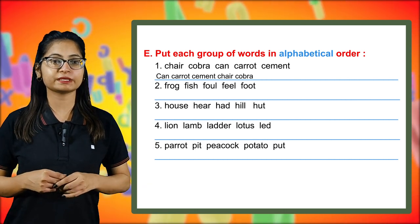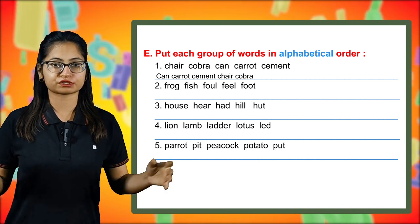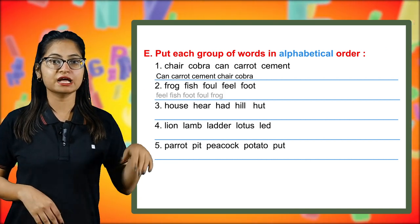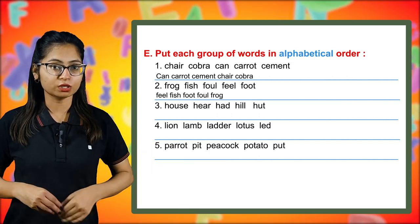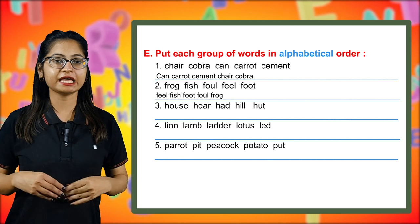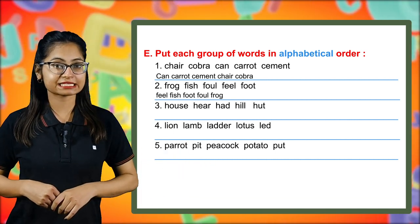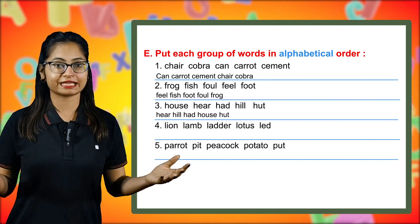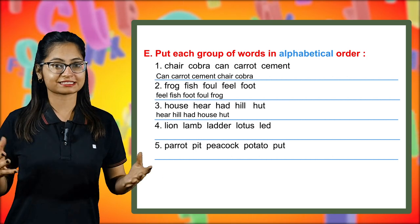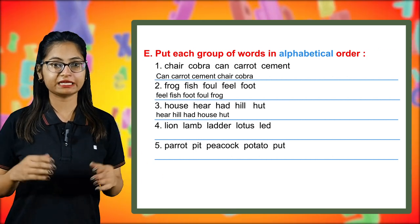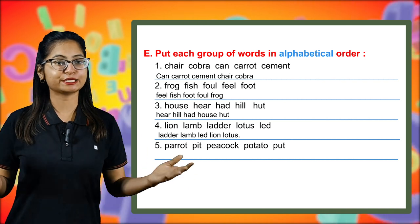The next group is frog, fish, fowl, feel, foot. The answer is: feel, fish, foot, fowl, frog. The next group is house, here, had, hill, hut. The answer is: had, here, hill, house, hut. The next group gives the answer: lamb, lead, letter, lion, and lotus.